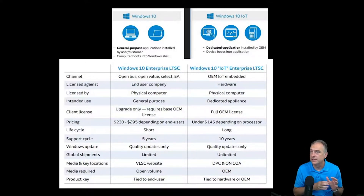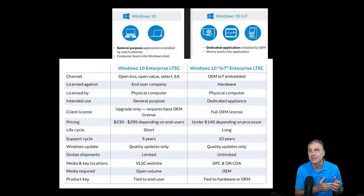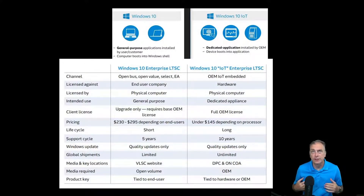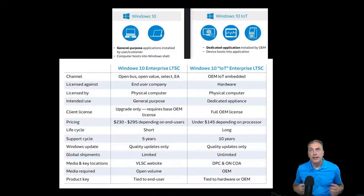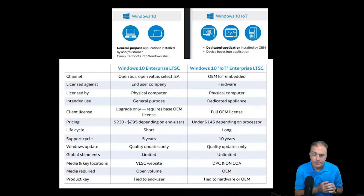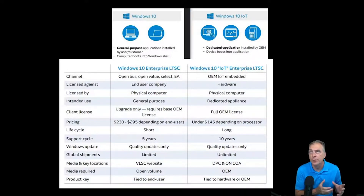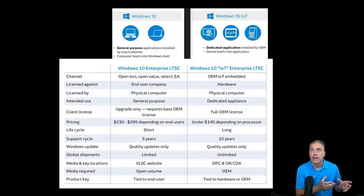Both of them are licensed against the physical computer. It's just that the OEM IoT version has a physical sticker that gets applied to the computing device, while the open volume has no stickers — it's an actual volume agreement and the agreement is tied to the company purchasing the licenses. The biggest thing that catches people is the fact that in the open volume channel, Windows Enterprise is an upgrade only, so it still requires an OEM base license. Your computing device has to have an OEM Windows 10 Pro license, and then you're buying an upgrade — and a very expensive one.